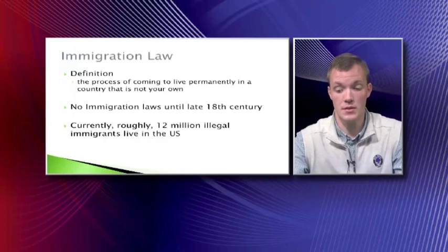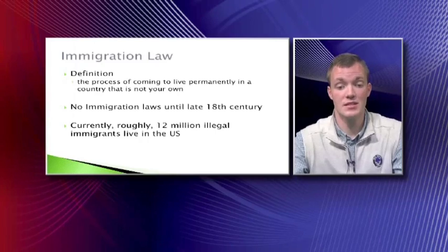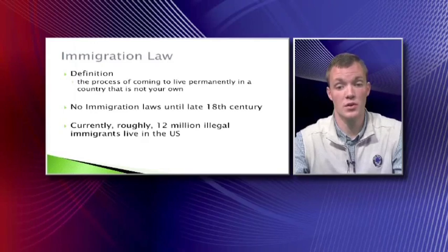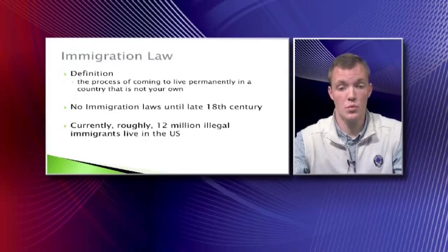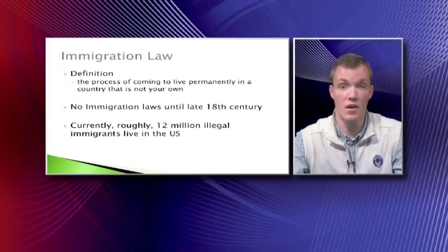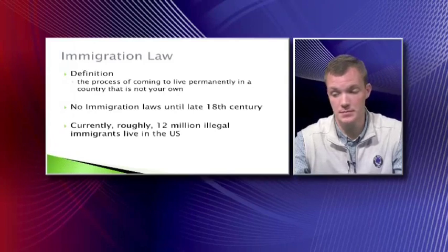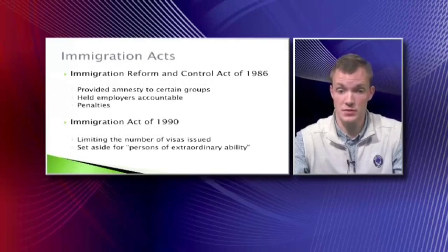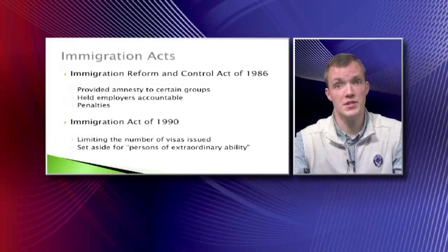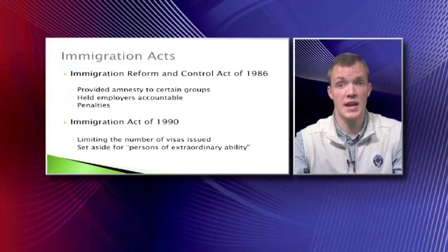Currently, roughly 12 million illegal immigrants live in the U.S. This number is constantly growing year after year, which is why immigration is a major topic amongst Americans. Many provisions are currently being made to exclude certain groups, which is why immigration reform is at the forefront of the Obama Administration. The two most recent immigration acts are the Immigration Reform and Control Act of 1986 and the Immigration Act of 1990.